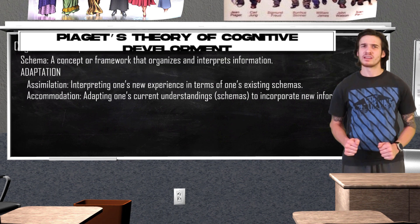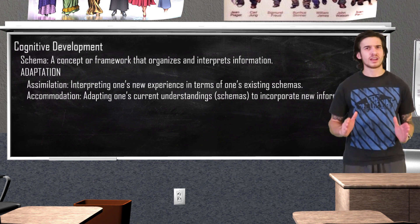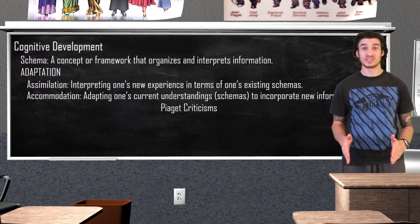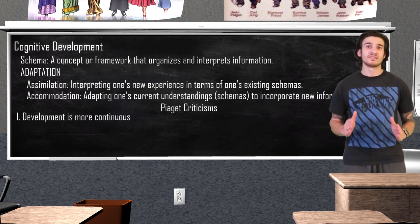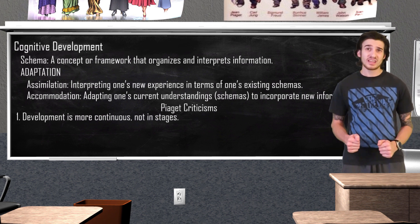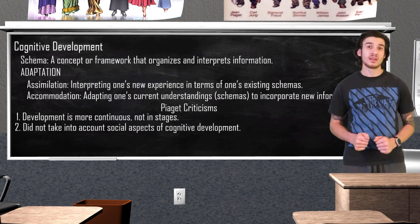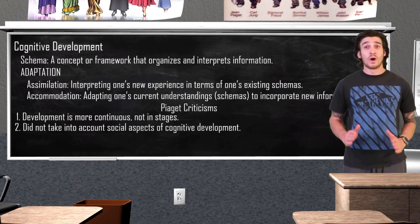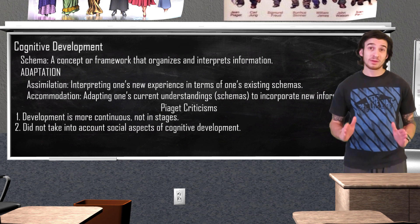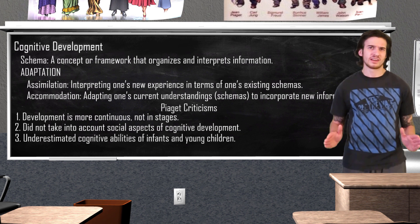While very groundbreaking at the time, Piaget's theory is quite controversial today. Several studies do agree with Piaget's sequence of cognitive development, but not necessarily in the stage-like fashion he proposed — today, psychologists look at development as more of a continuous act. Russian psychologist Lev Vygotsky believed that Piaget did not take into account social factors in regards to cognition, while cognitive psychologist René Baillargeon believes that Piaget underestimated the cognitive abilities of infants and young children. Even with these criticisms, Piaget's discoveries did lay the groundwork for our understanding of cognitive development.